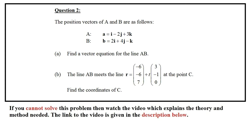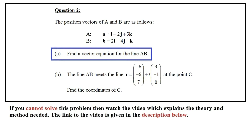So a is given by vector a, and that's equal to the vector i minus 2 vector j plus 3 vector k. And b is given by vector b, which is equal to 2 vector i plus 4 vector j minus the vector k. In part a, find the vector equation for the line AB.